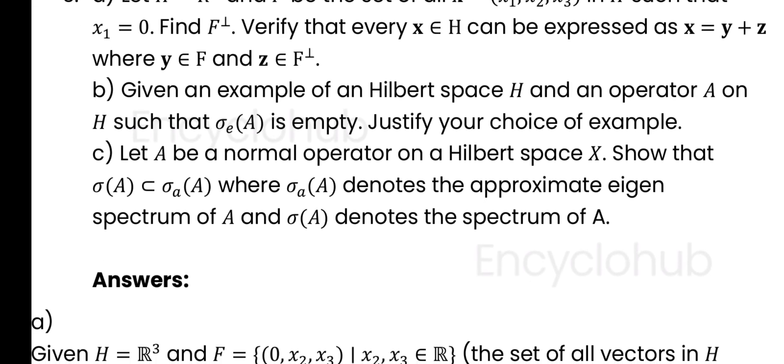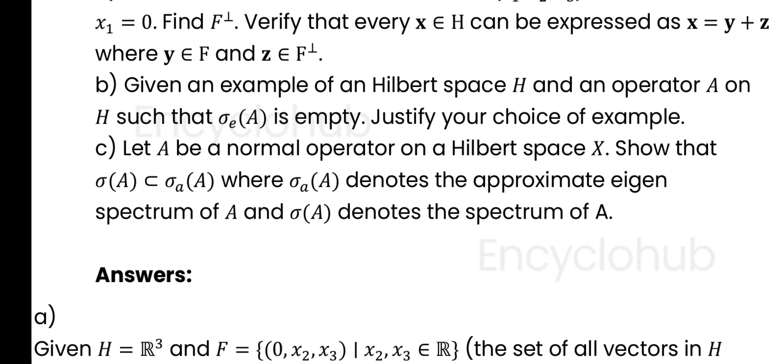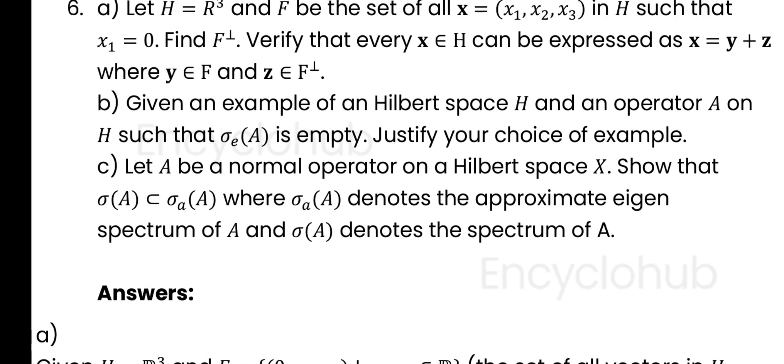Part (b): Give an example of a Hilbert space H and an operator A on H such that the approximate eigen spectrum is empty. Justify your choice of example.